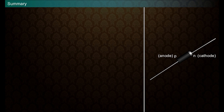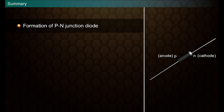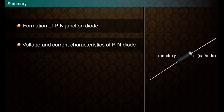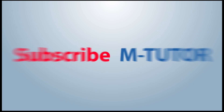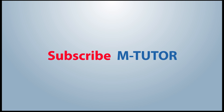Summary: this brings us to the end of the lesson. In this lesson, we have learned about the formation of a P-N diode, voltage and current characteristics of a P-N diode, and the P-N diode breakdown mechanism.